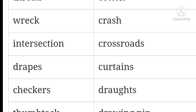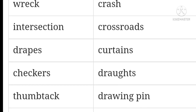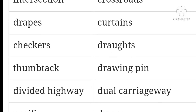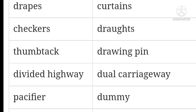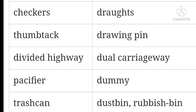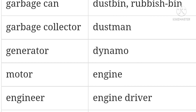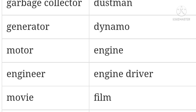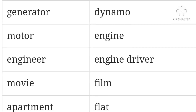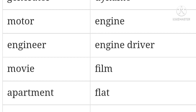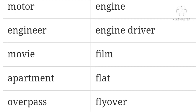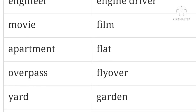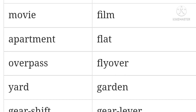Drops / thumb tack — drawing pin. Divided highway / dual carriageway. Pacifier / dummy. Trash can / dustbin. Garbage can / rubbish bin. Garbage collector / dustman. Generator / dynamo. Motor / engine. Engineer / engine driver. Movie / film. Apartment / flat. Overpass / flyover. Yard / garden.